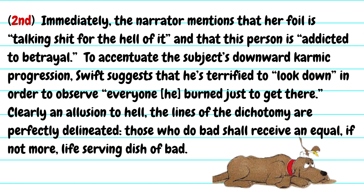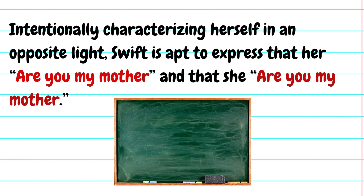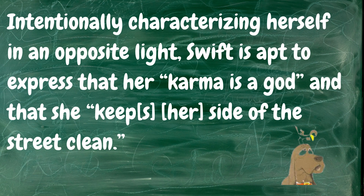Choosing the wrong quotes and paraphrases breaks the line of reasoning — it's like the bird going up to the dog saying 'Are you my mother?' From here, I need you to find quotes for the characterization portion: 'Intentionally characterizing herself in an opposite light, Swift is apt to express that her [blank] and that she [blank].' Here's how I fill that in: 'Swift is apt to express that her karma is a god and that she keeps her side of the street clean.' Absolute deliberation with quote selection.